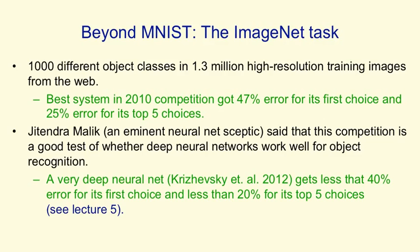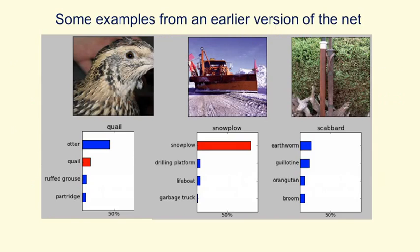Here are some examples of the kinds of images you have to recognize. These are images from the test set that the network has never seen before. Below each example I'm showing you what the neural net thought the right answer was — the length of the horizontal bar indicates confidence and the correct answer is in red. In the middle, it correctly identified a snowplow, and its other choices were also fairly sensible. It does look a little bit like a drilling platform, and its third choice — a lifeboat — actually looks very like a lifeboat. So its errors are very plausible.